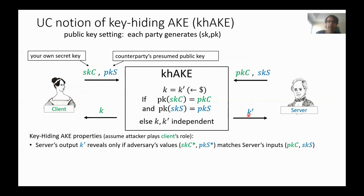Basically, everything about these inputs must be hidden by the protocol messages. However, the server computes the key and can use it, and without loss of generality gives it to the environment, which gives it to the client. So the client can test whether its secret key and public key input match what the server used. If you have the corresponding matching pair, you will figure out that those match yours. But if you don't have them — in particular, if you don't have the corresponding secret key — you learn nothing about either input.